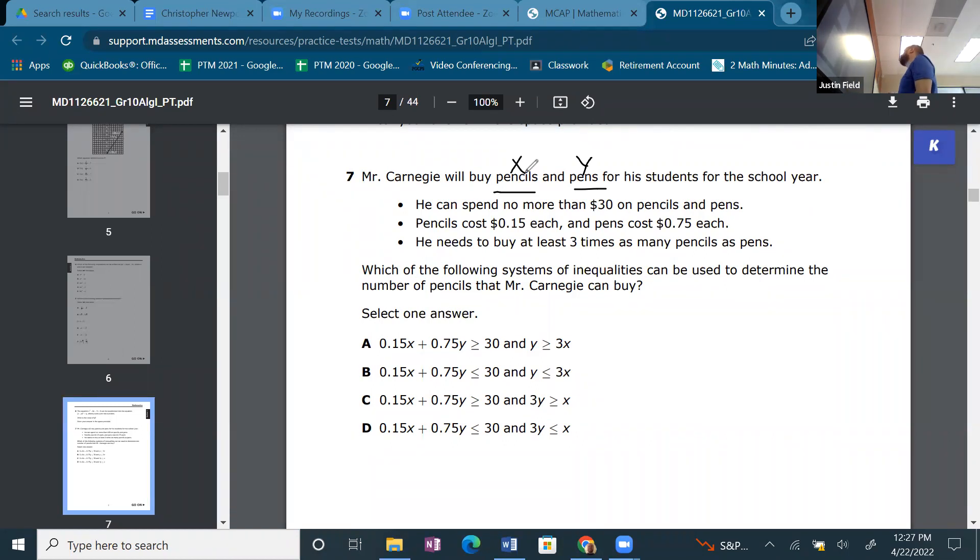He can spend no more than $30 on pencils and pens. Okay. Pencils, no tip. Oh, so it's going to be like this. It's going to be less than or equal to 30, right? Pencils cost $0.15 each. So that's the coefficient of x. Okay, and pens cost $0.75 each. So add that.